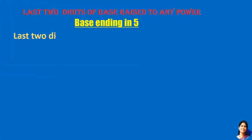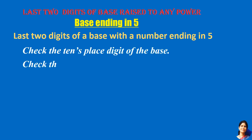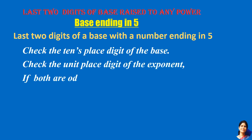For the last two digits of a base with a number ending in 5, the procedure is: check the tens place digit of the base, and check the units place digit of the exponent. If both are odd, it will end in 75. Otherwise, the last two digits will be 25.